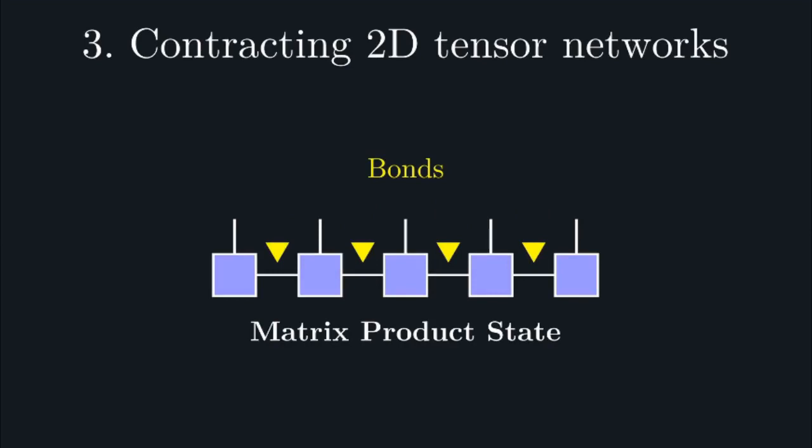As long as the bond dimension remains bounded, storage and manipulation of MPS remains efficient. This bond dimension is going to control the quality of the approximate contraction algorithm. An important property of MPS is that they admit a procedure known as bond truncation. Bond truncation allows us to find low bond dimension approximations to MPS states, essentially acting as a lossy compression procedure.